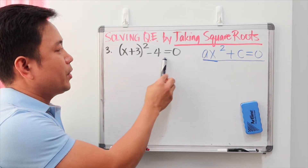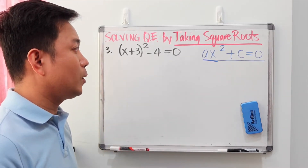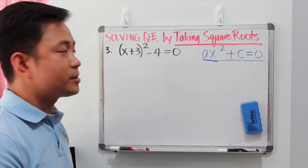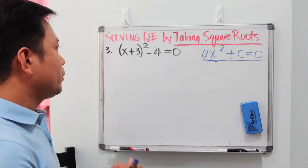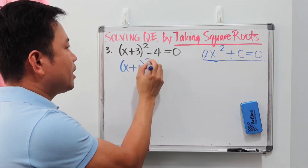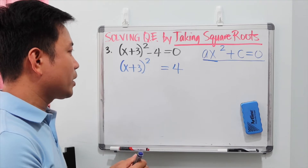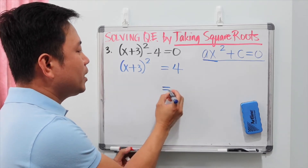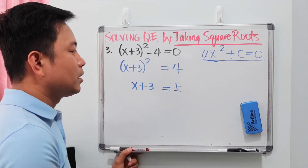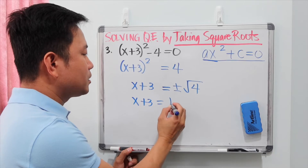Example 3 looks different from the format ax squared plus c equals 0, so you might think we need to expand the binomial. However, we do not expand it. Instead, we transfer negative 4 to the right side by adding 4 to both sides, giving x plus 3 squared equals 4. Then we take the square root of both sides: x plus 3 equals plus or minus square root of 4, which simplifies to plus or minus 2.